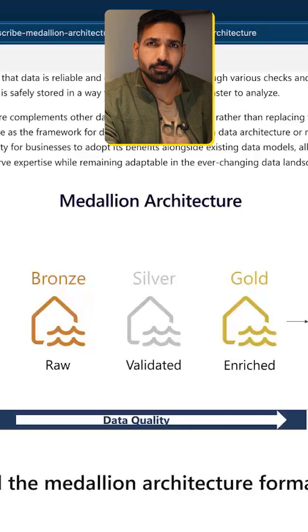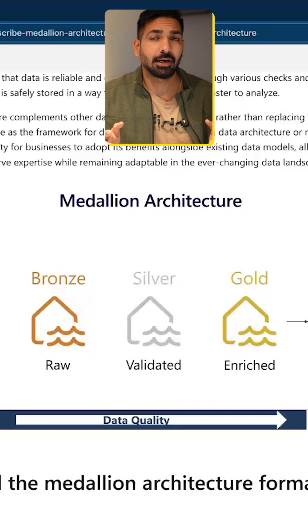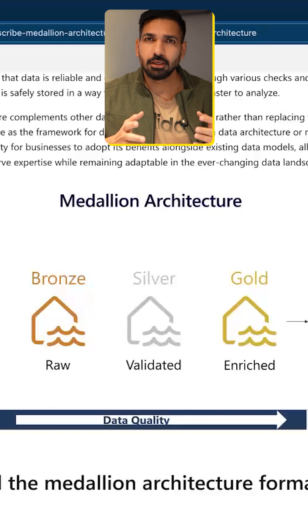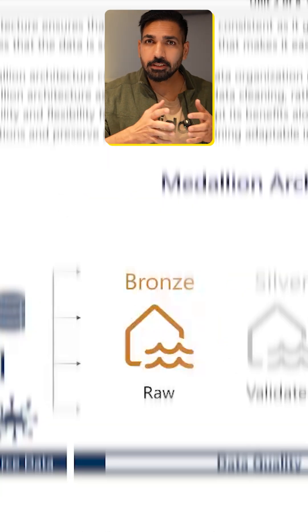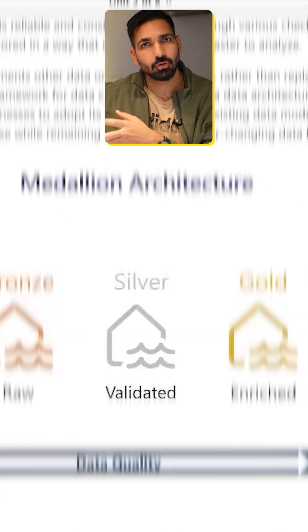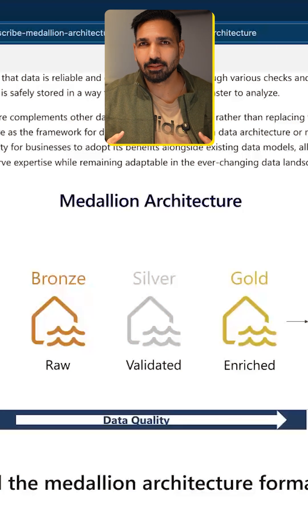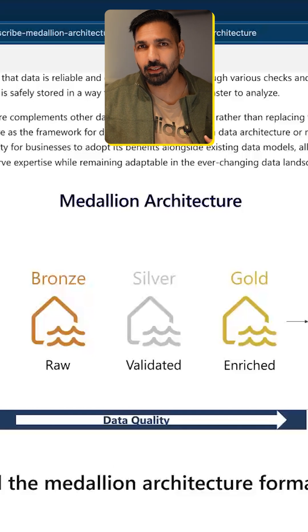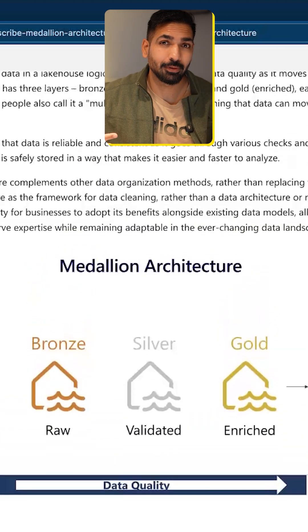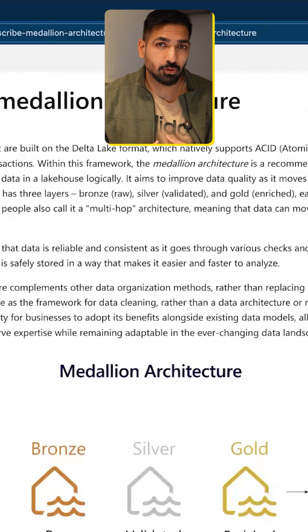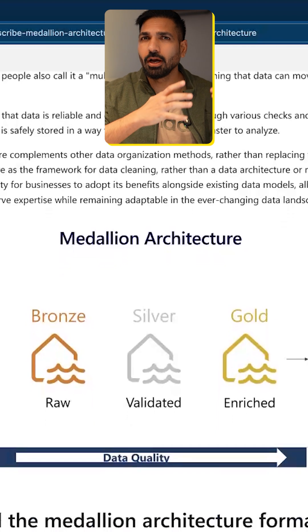Ideally, medallion architecture has only three layers, as you can now see on your screen: there will be a bronze layer, silver layer, and gold layer. You can have more than three layers — it doesn't necessarily mean you have to have exactly three. It also depends on how your organization is going to process the data.